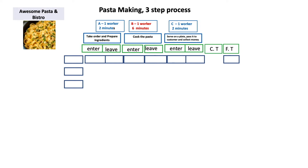Customer one comes and there is no one in the queue, so he places his order at time equals zero. His order gets prepared at process step A and finishes at time equals two minutes. It then enters process step B (cooking) at t=2, cooks for six minutes, and leaves process step B at t=8. It then enters process step C at t=8 and leaves at t=10. So customer one gets his pasta at time equals ten minutes.